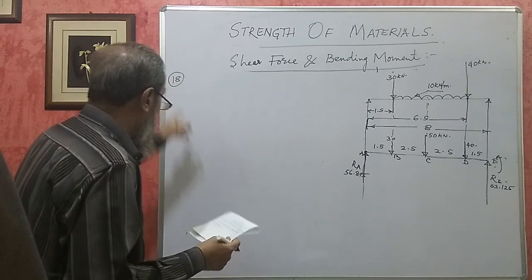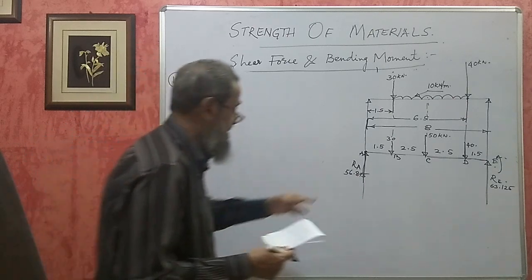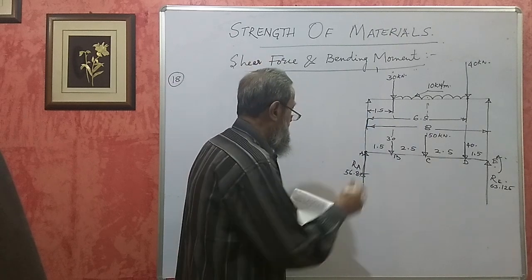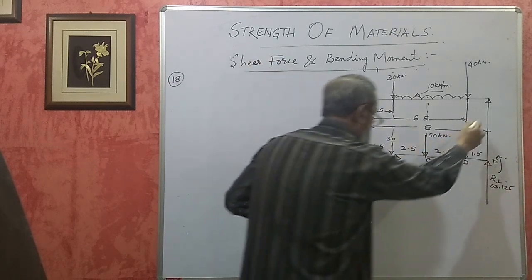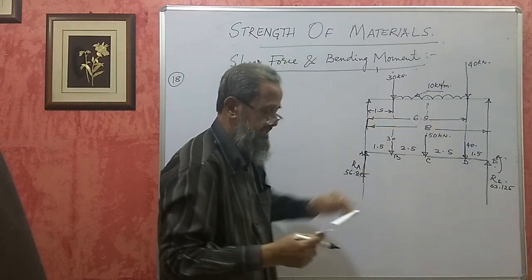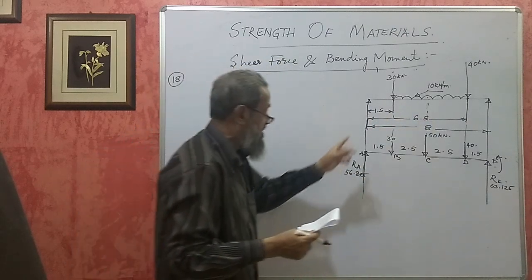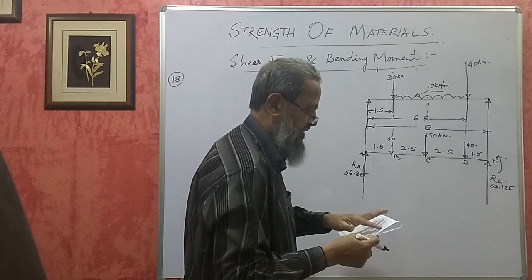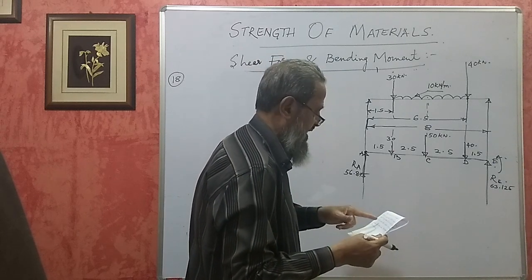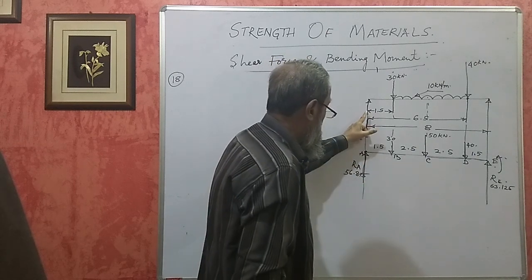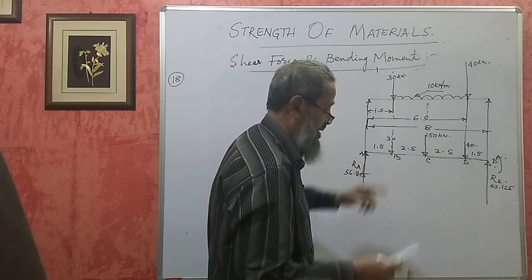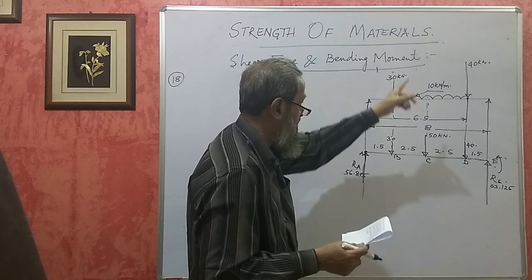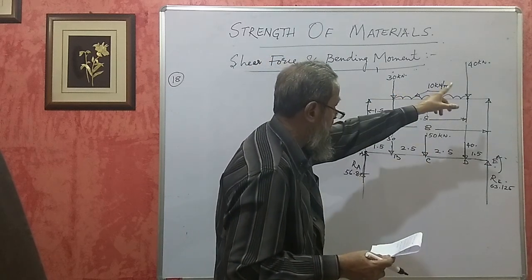Problem number 18 selected from the question bank: a simply supported beam of 8 meter length, simply supported with one support on the left side and one on the right side. It carries two point loads of 30 and 40 kilonewton at distances of 1.5 meter and 6.5 meter from the left support respectively.